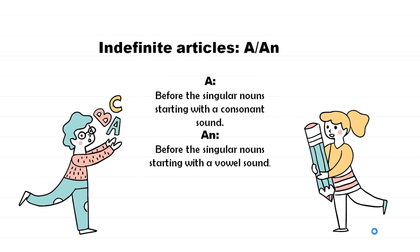Article A comes before a singular noun starting with a consonant sound — for example, a chair, a boy. Whereas AN comes before a singular noun starting with a vowel sound — for example, an elephant.